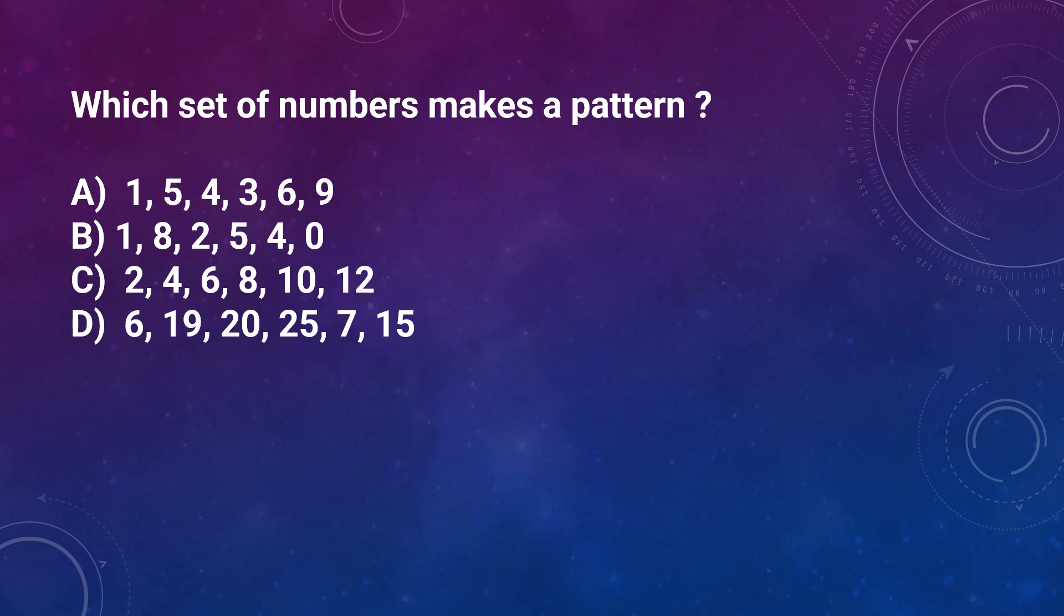Question number 10: Which set of numbers makes a pattern? Option A: 1, 5, 4, 3, 6, 9, Option B: 1, 8, 2, 5, 4, 3, 6, 9, Option C: 2, 4, 6, 8, 10, 12, Option D: 6, 19, 20, 25, 7, 15. And the correct answer is option C, because 2, 4, 6, 8. This is skip counting of 2 or table of 2.